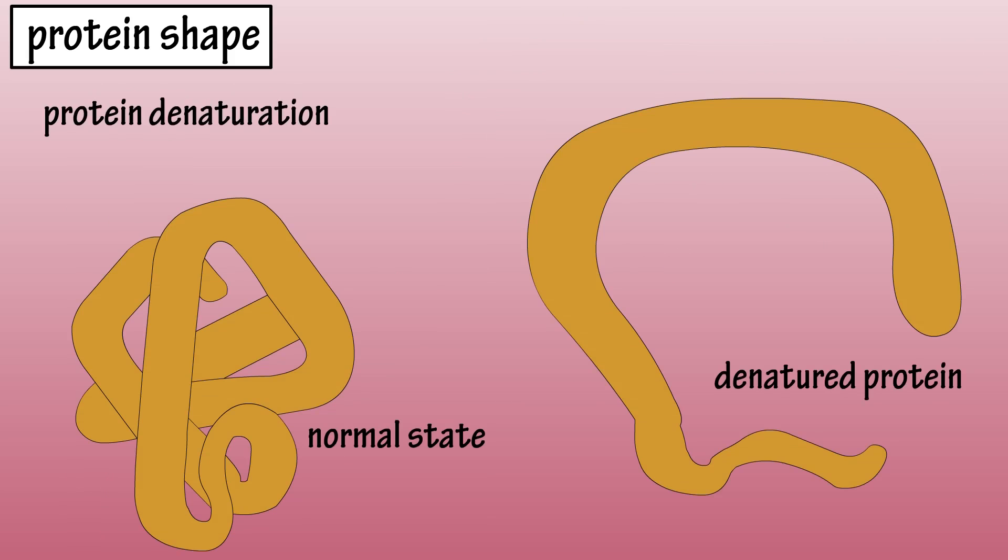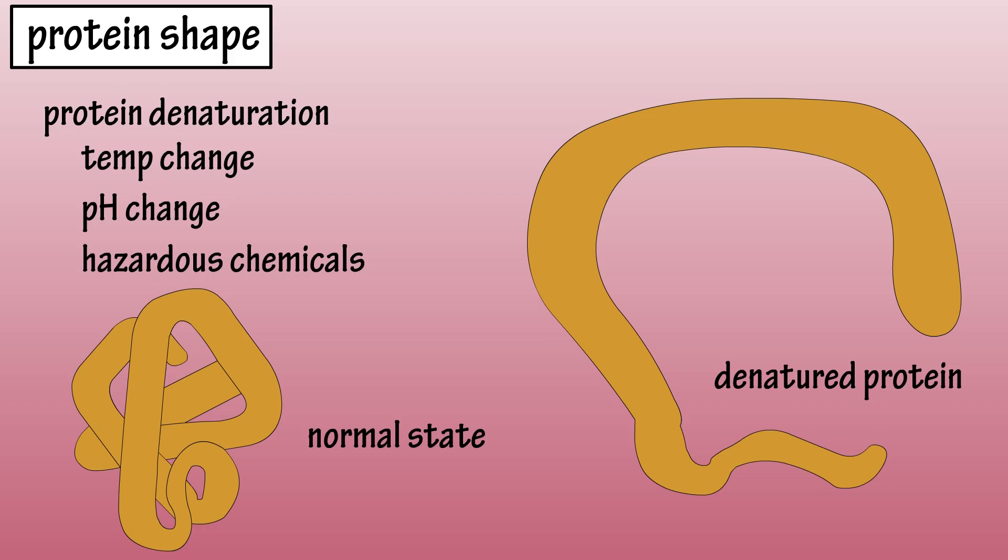Proteins can have their structure or shape altered by denaturation. When this happens, the protein is no longer able to carry out its job. Denaturation can occur from changes in temperature, changes in pH, or the presence of certain hazardous chemicals.